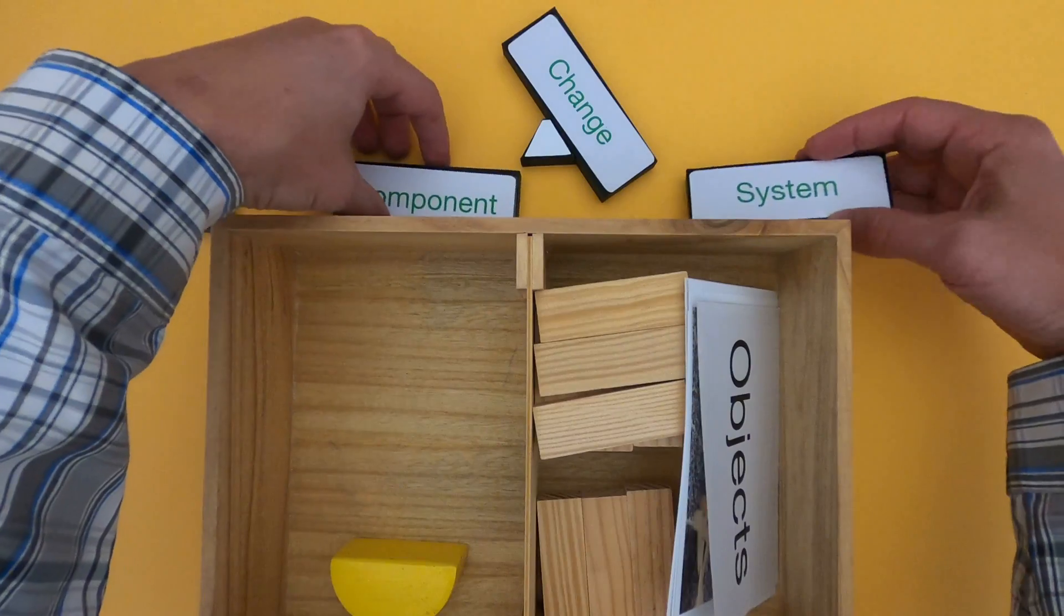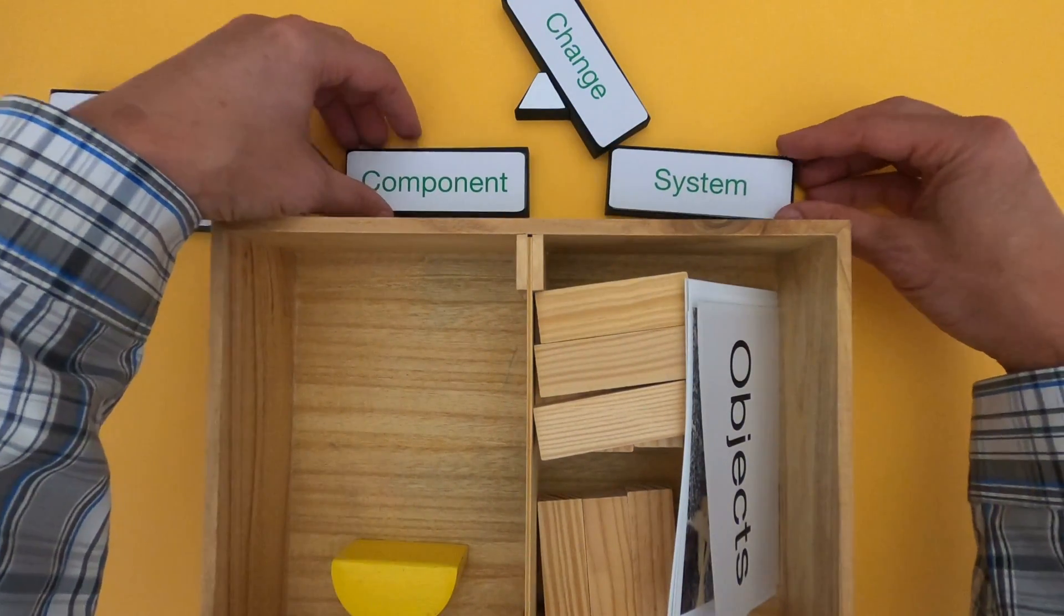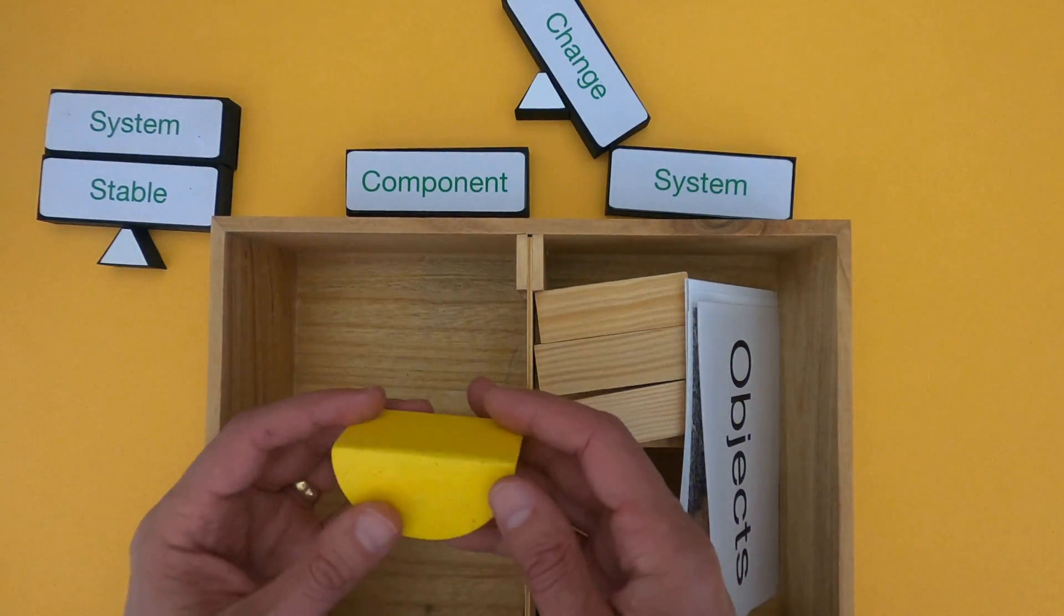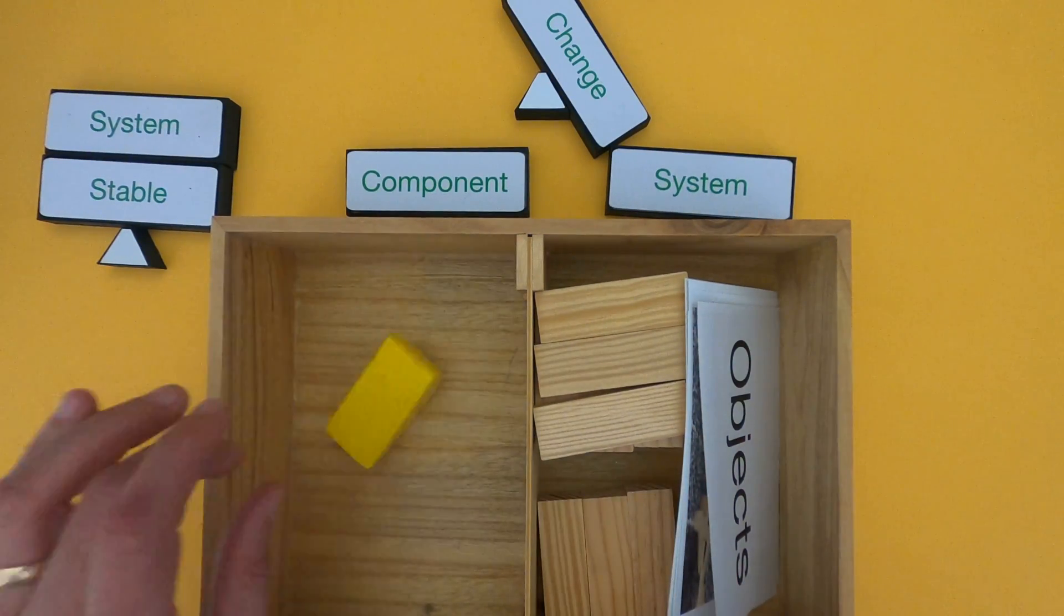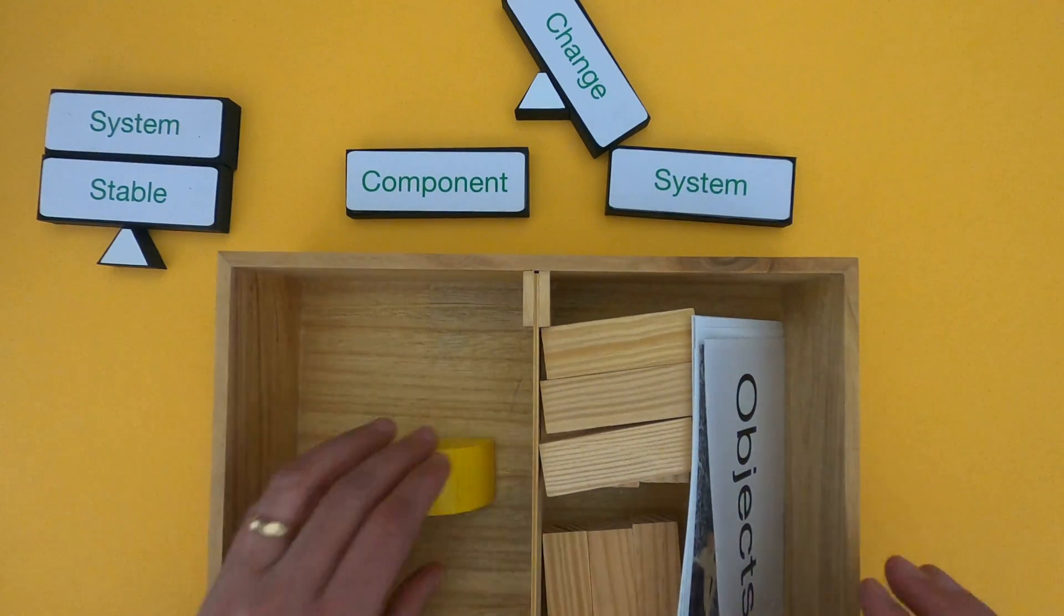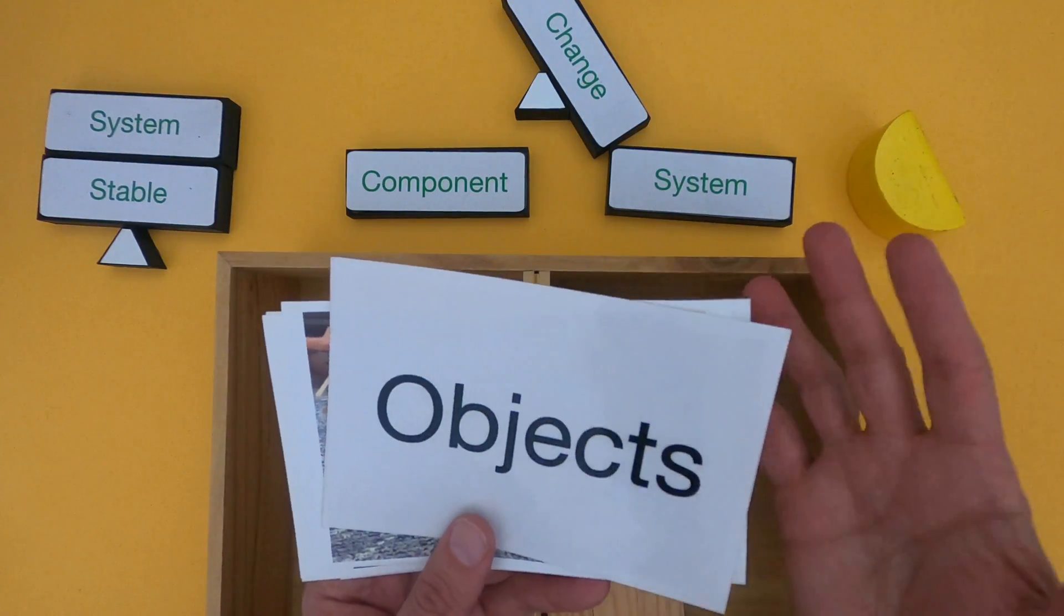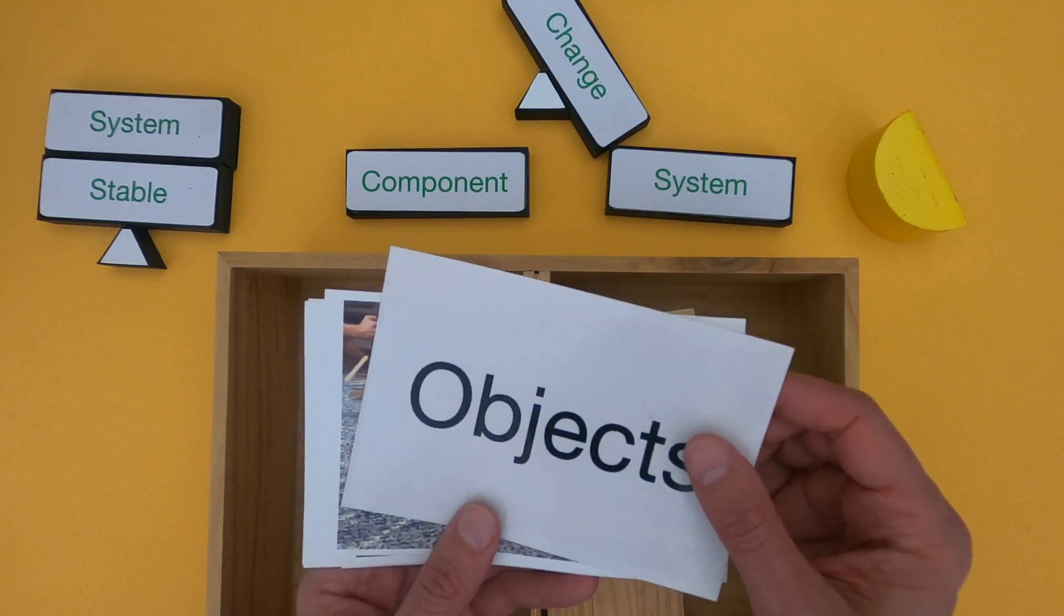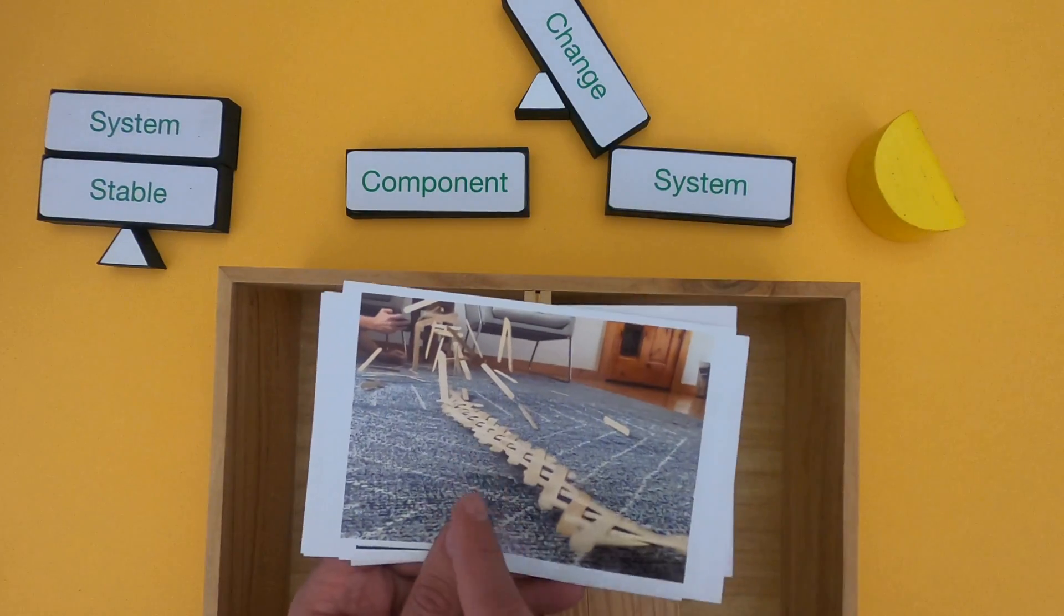How can change in one component of a system lead to change in the whole system? The object that represents stability and change is this yellow semi-circle because it can change quite a bit and also remain the same over time. After watching this video, you should be able to identify stable systems and how changes in one component can affect the whole system in something like this cobra weave.